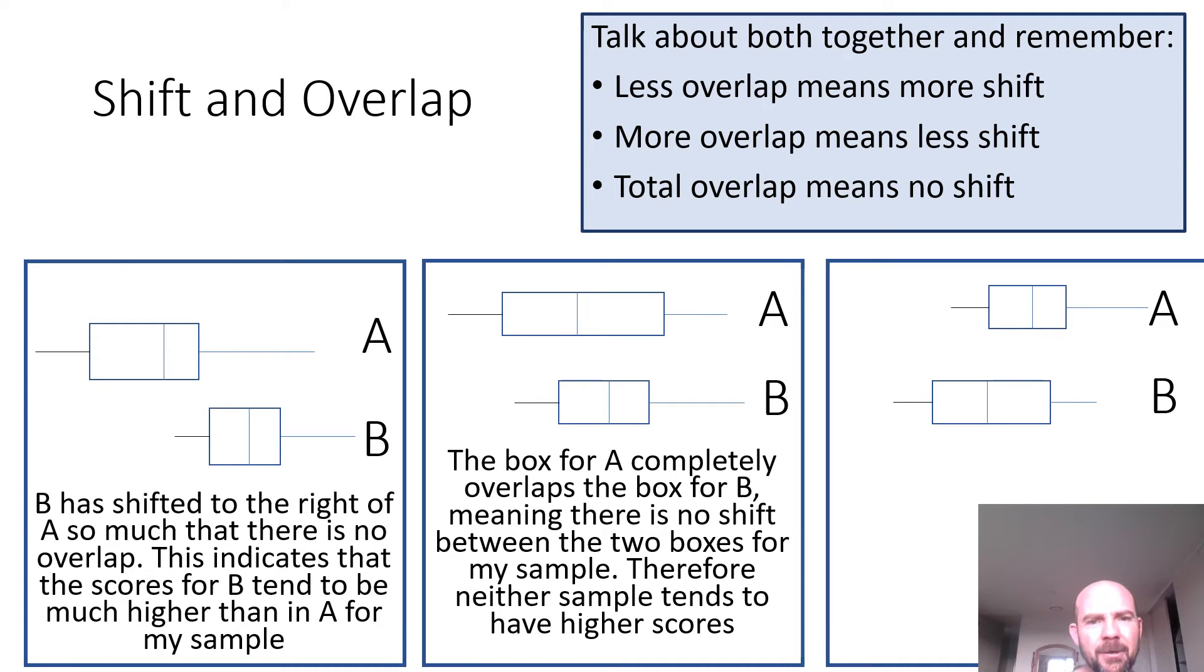Looking at the second one, oops, I accidentally clicked. But you can see that B is completely overlapped. And you can't really say that either has higher scores. A has higher and lower scores than B. There's no pattern there.